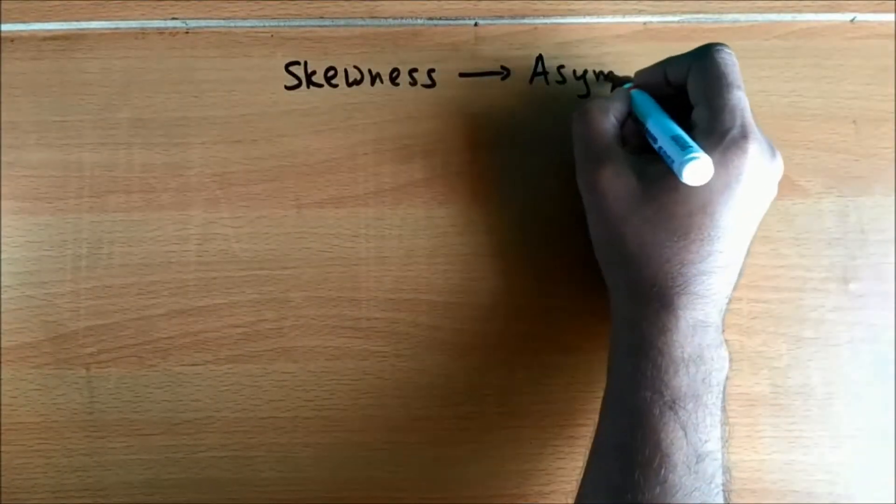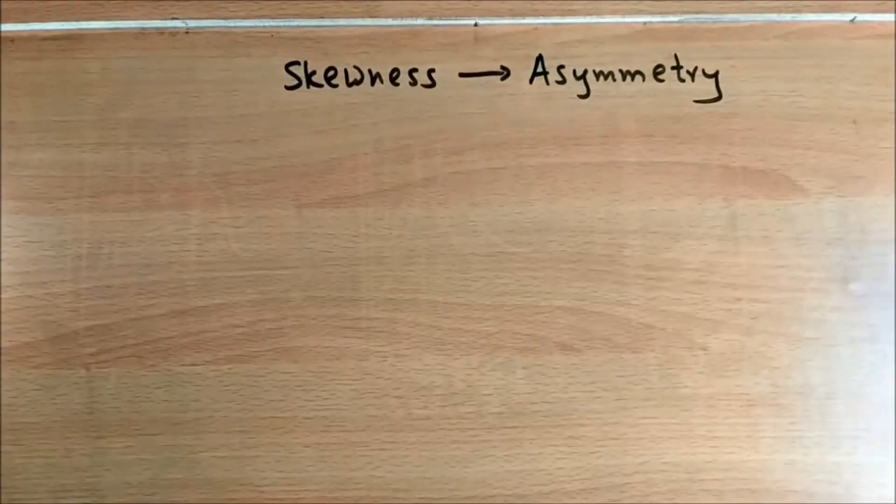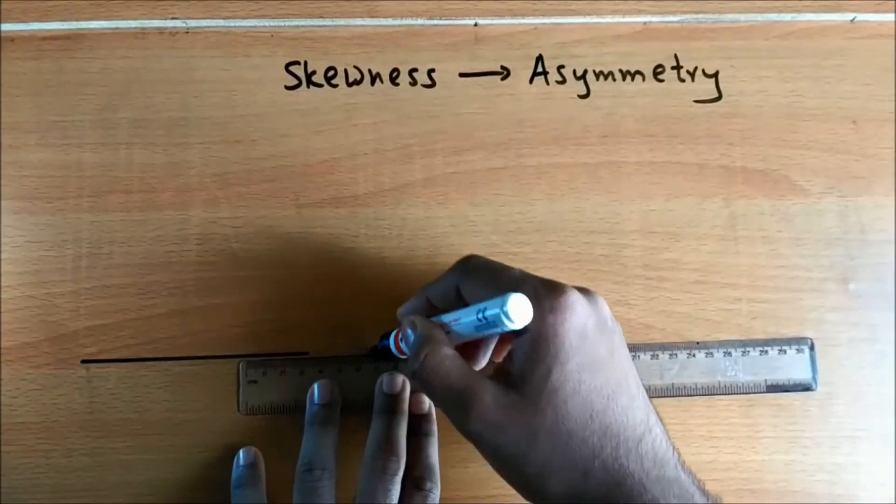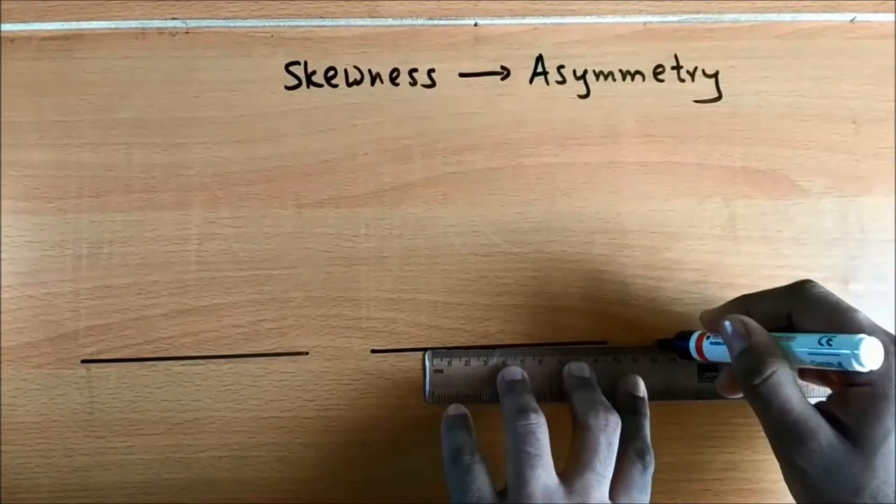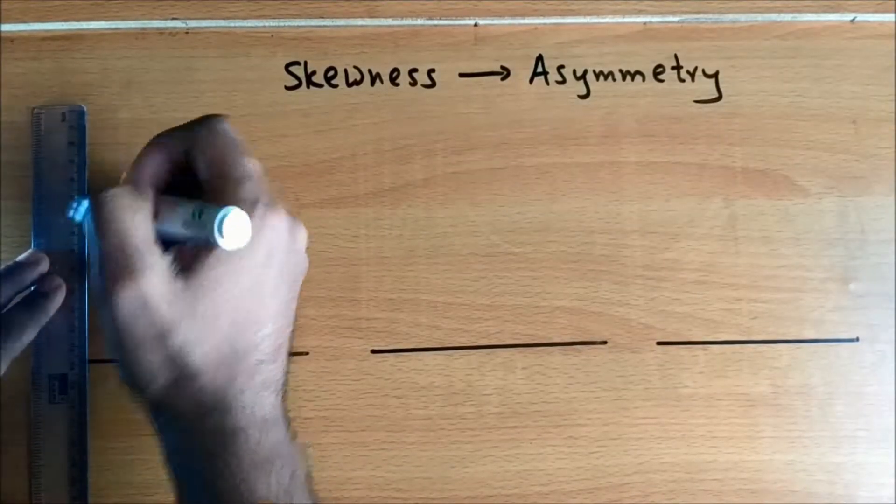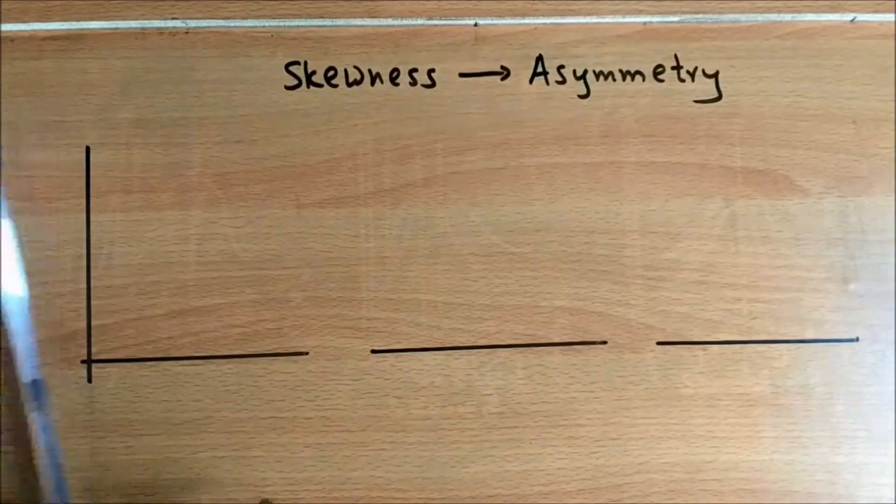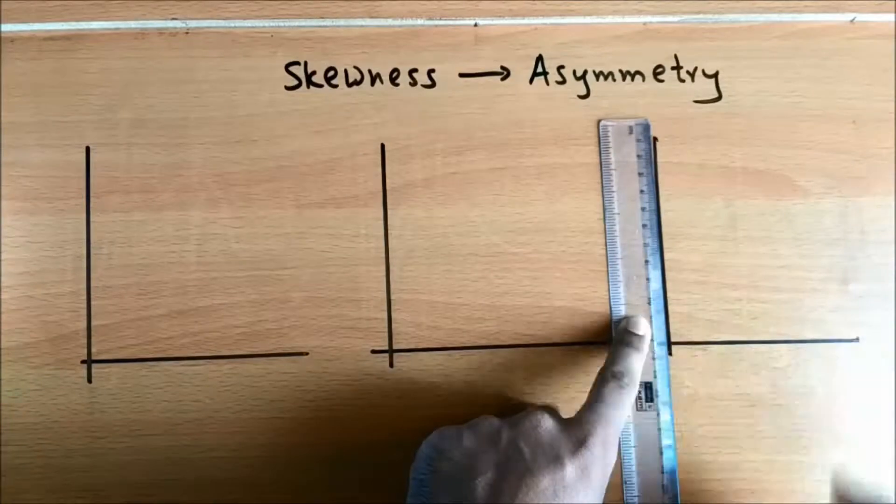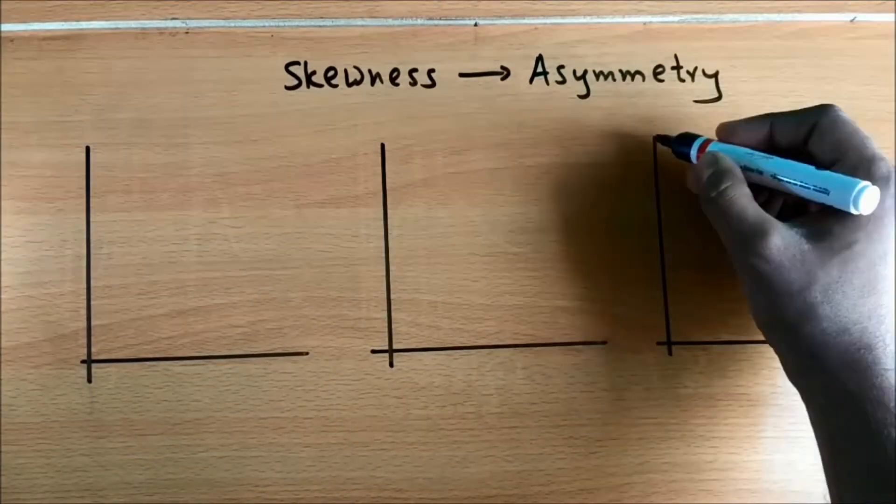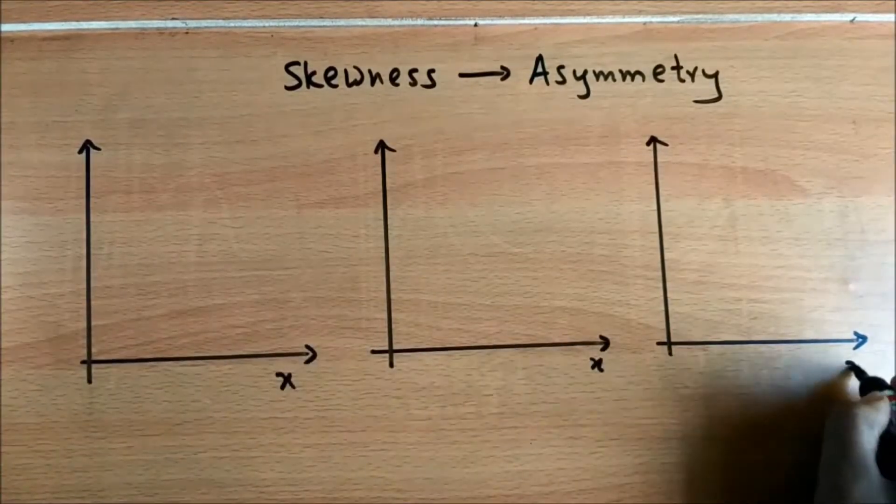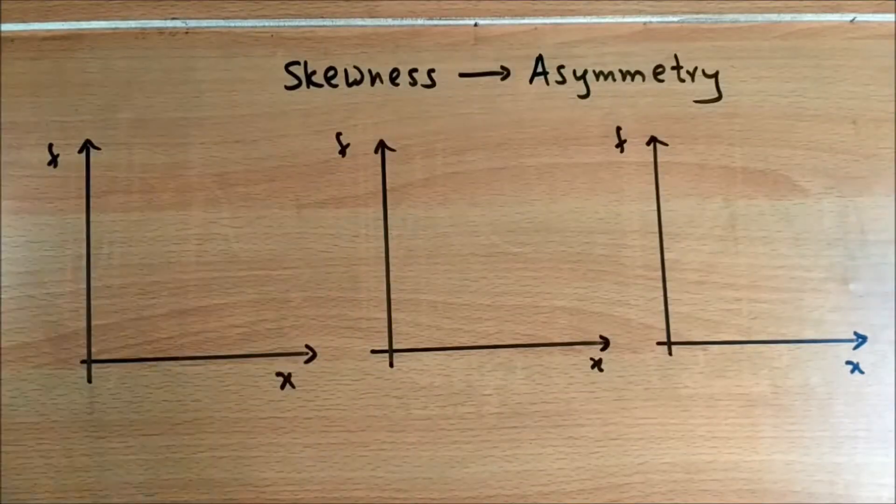Skewness means asymmetry, that is, not symmetrical. Now to explain this, let me draw three different frequency distributions. We draw the x and y axis, so I'll just prepare three x and y axes.